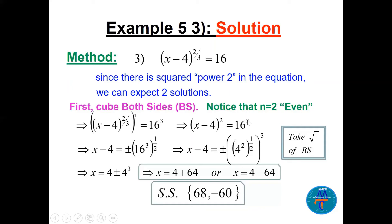Simplify 16³ raised to the power 1/2: write 16 as 4², so (4²)^3 = 4^6, and (4^6)^(1/2) = 4³ = 64. So x - 4 = ±64, meaning x = 4 + 64 = 68 or x = 4 - 64 = -60. These are not easy-looking solutions — please verify them at home.